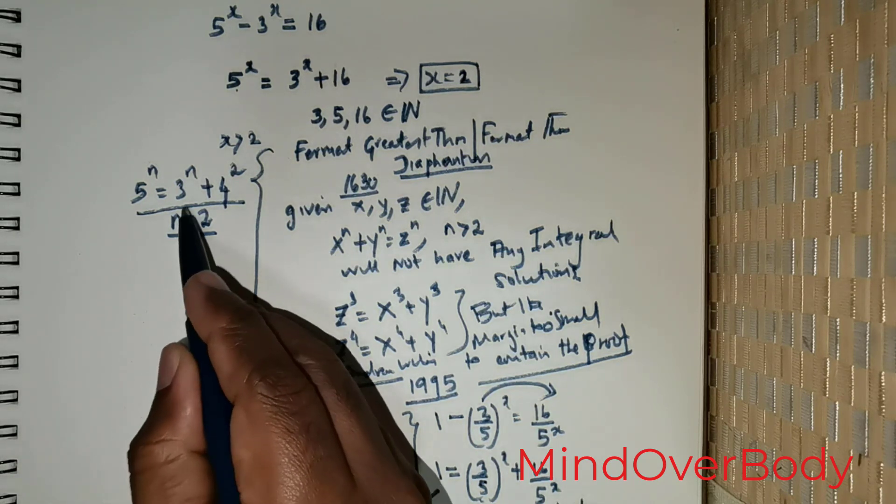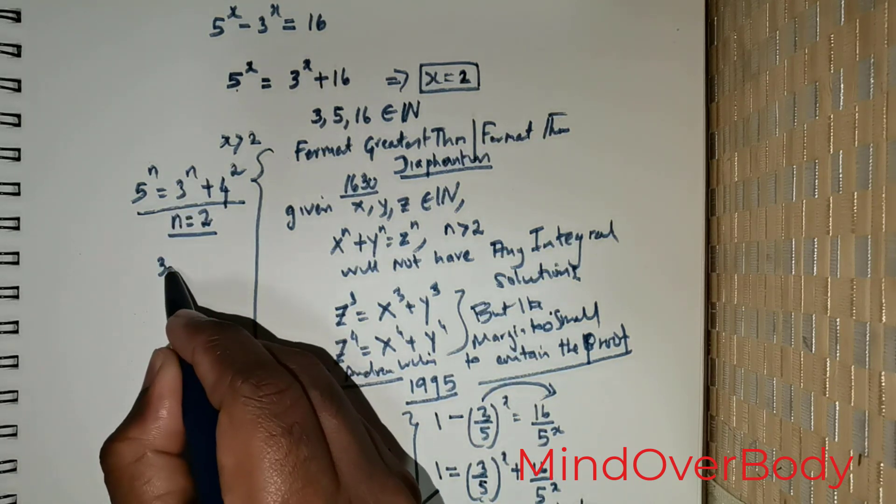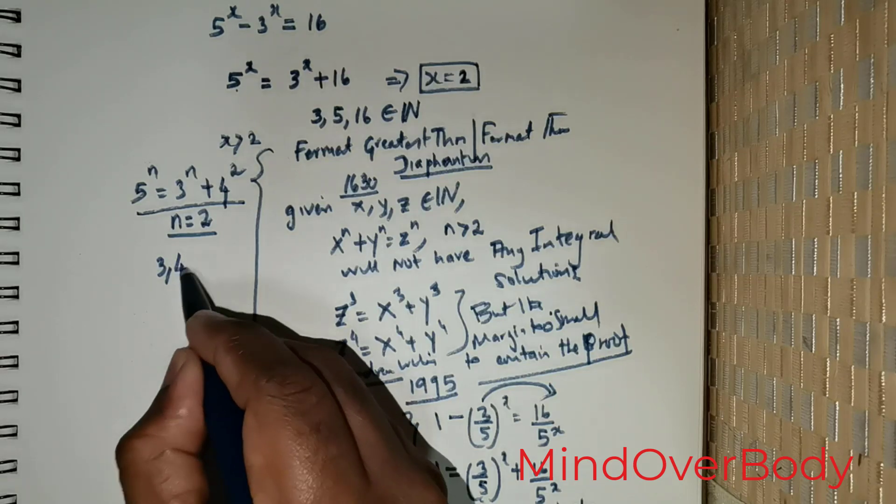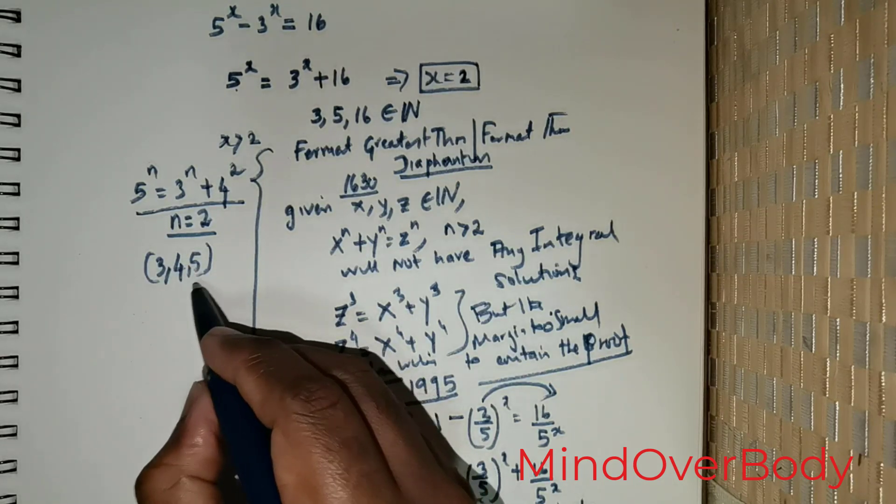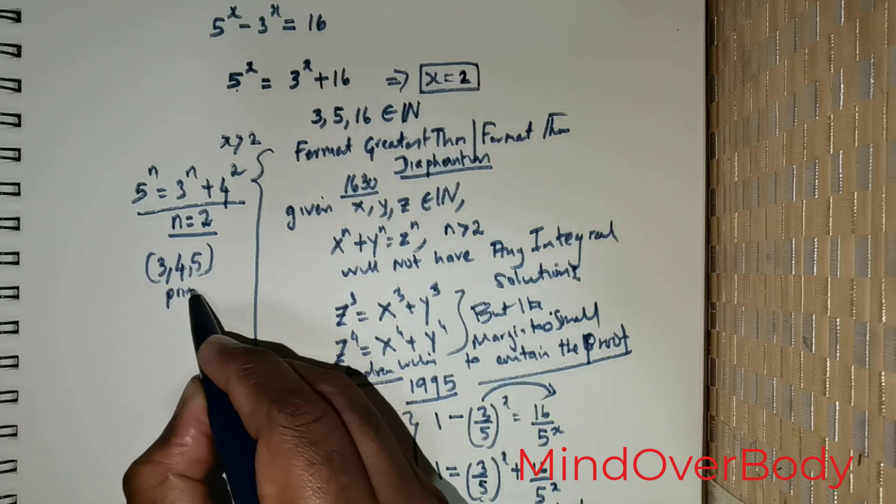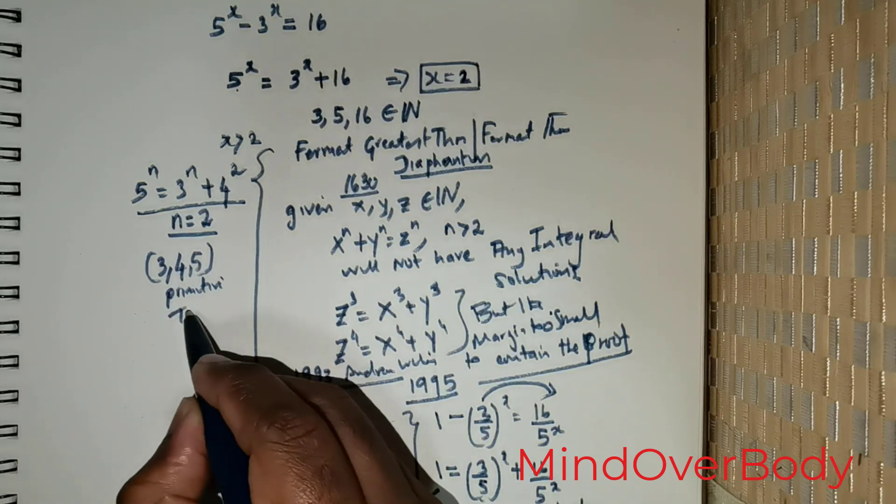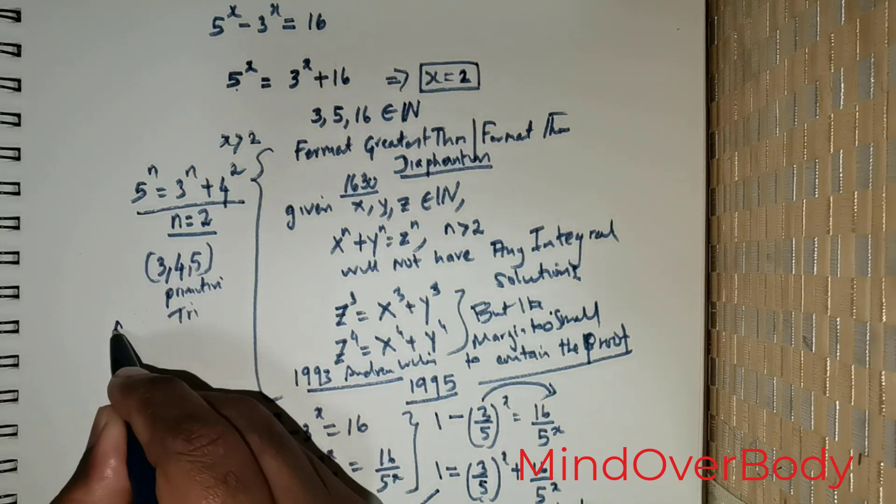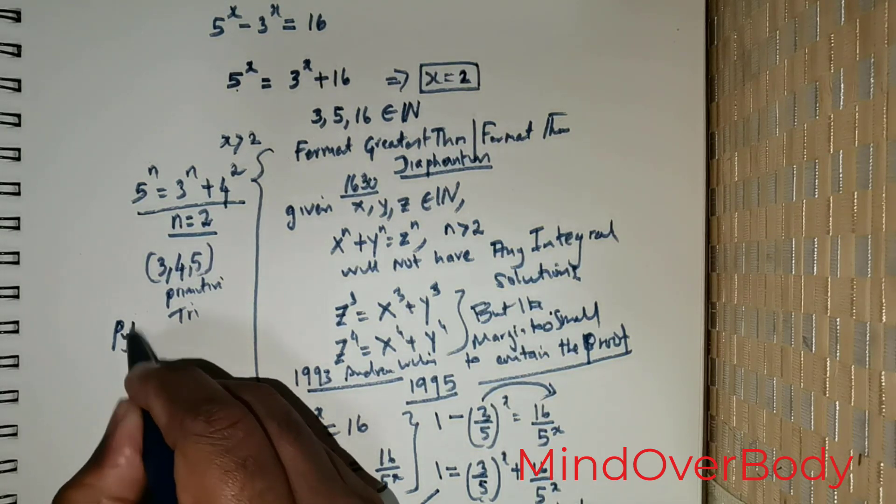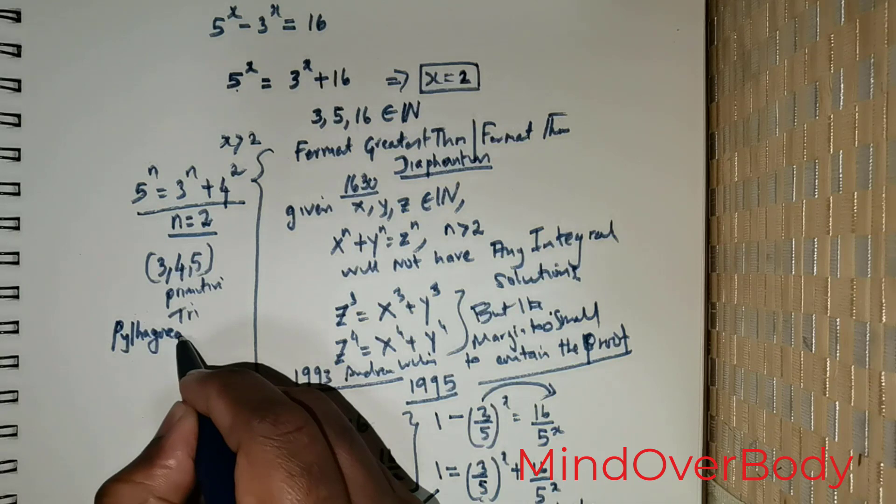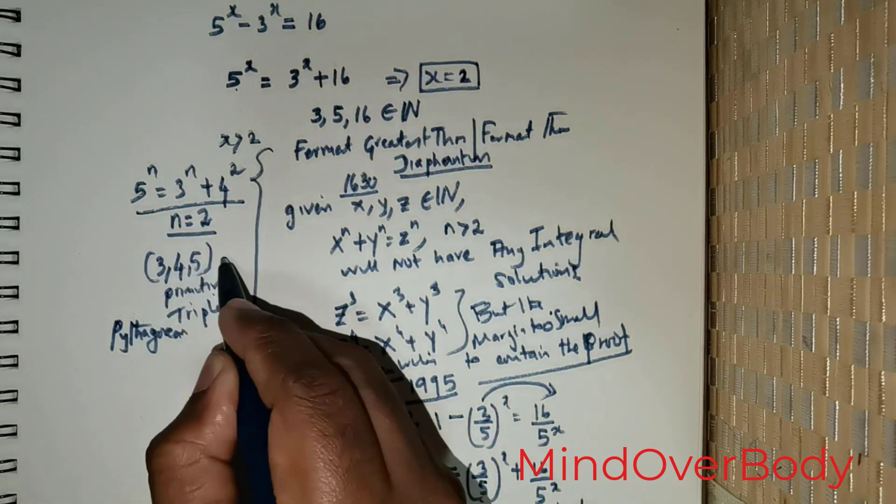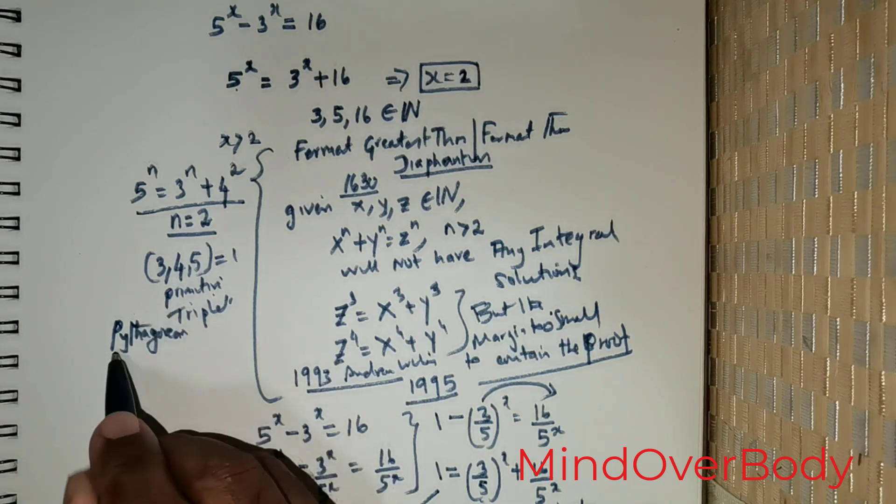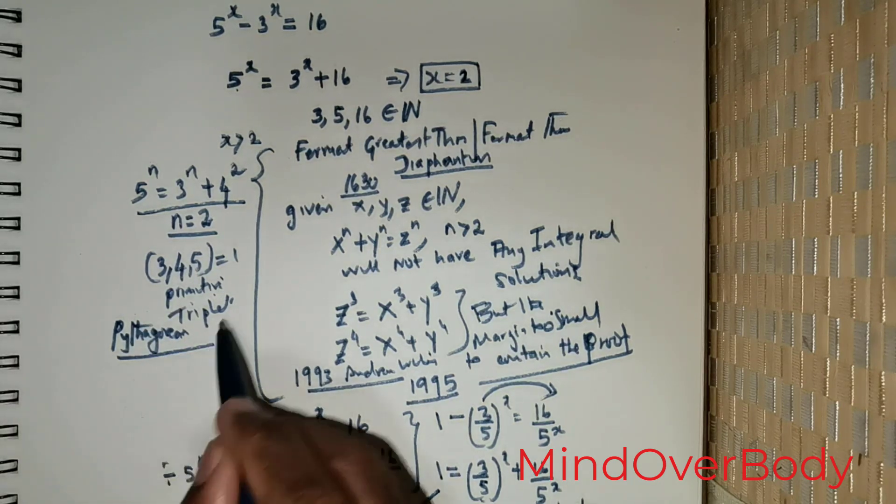It is also imperative to observe that 3, 4, 5 are called primitive triplets. In fact, to be more precise, they are called Pythagorean triplets, and since their GCD is equal to 1, we call them primitive Pythagorean triplets.